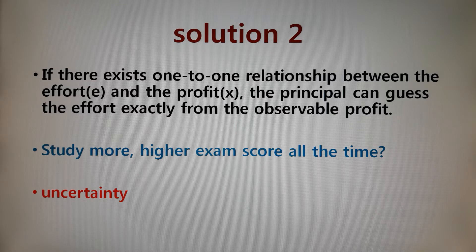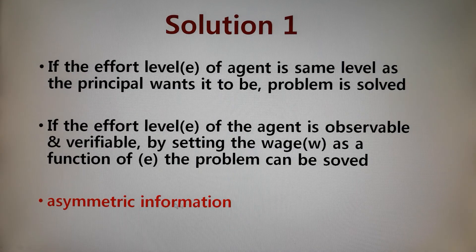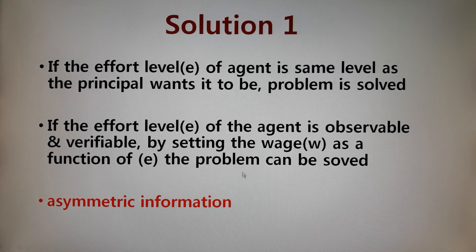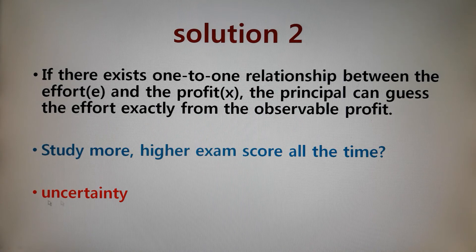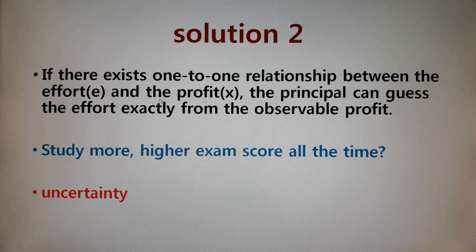Let's move on to Solution 2. This problem is related to something called uncertainty, which is a little different from the asymmetric information part. In asymmetric information, the effort is observable and controlled by the agent but not observable to the principal. If there is a one-to-one relationship between effort and profit, the problem would be solved.